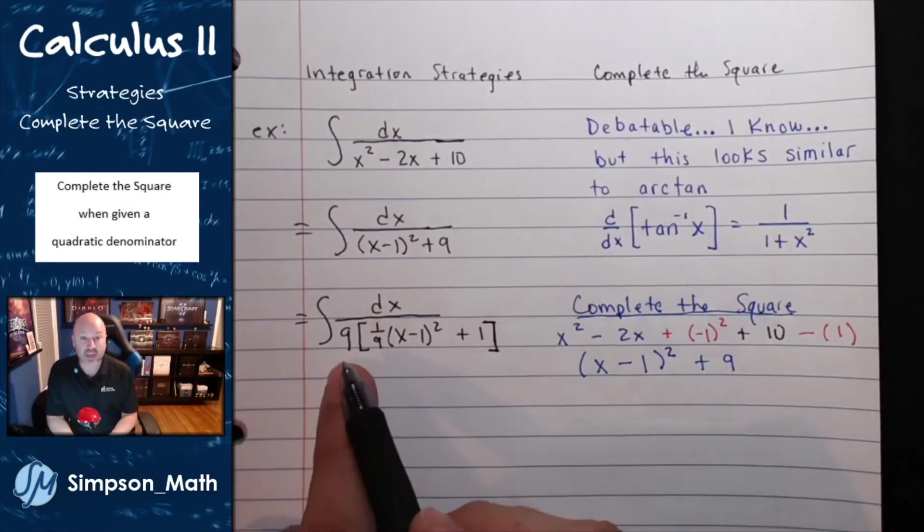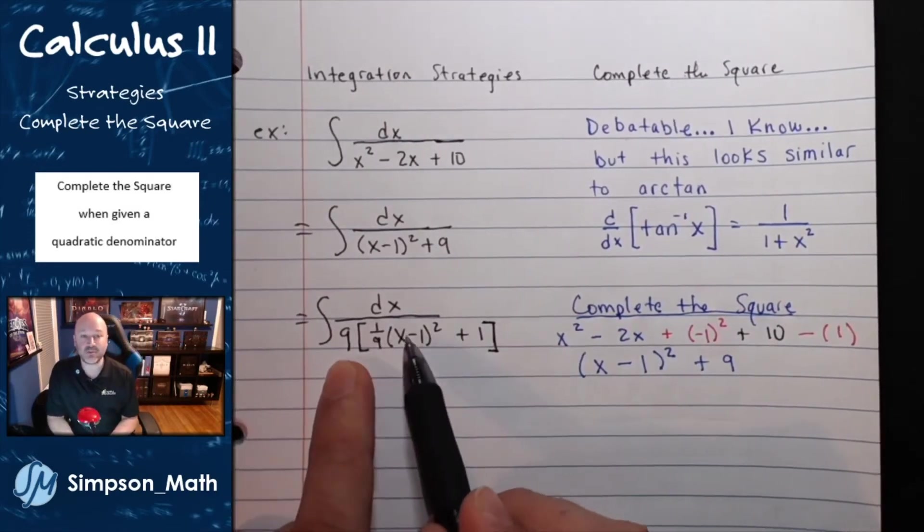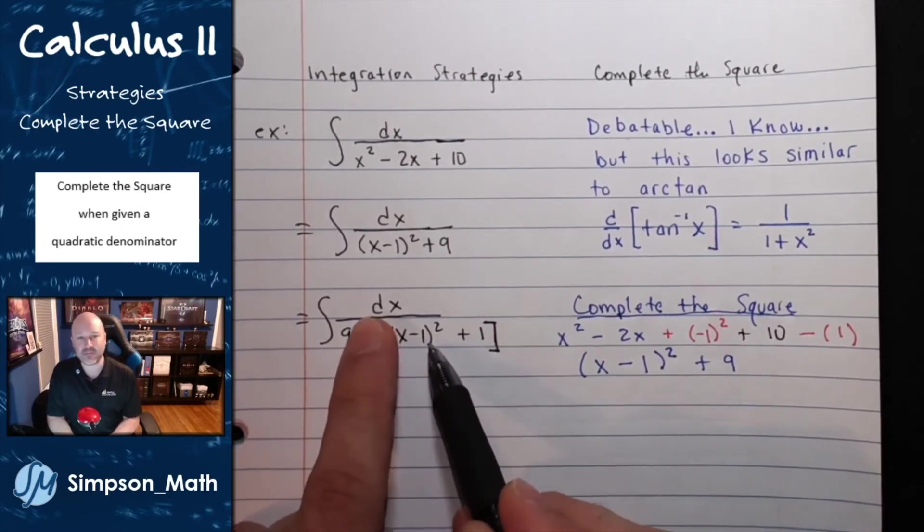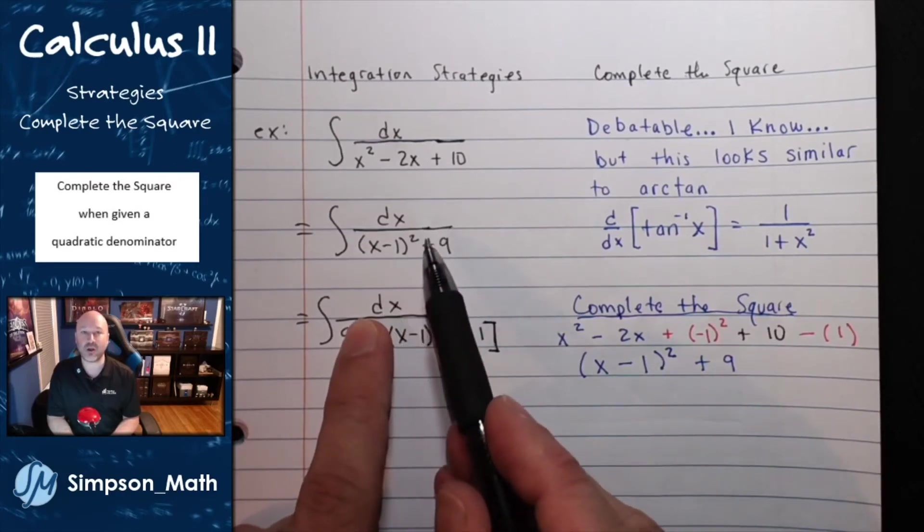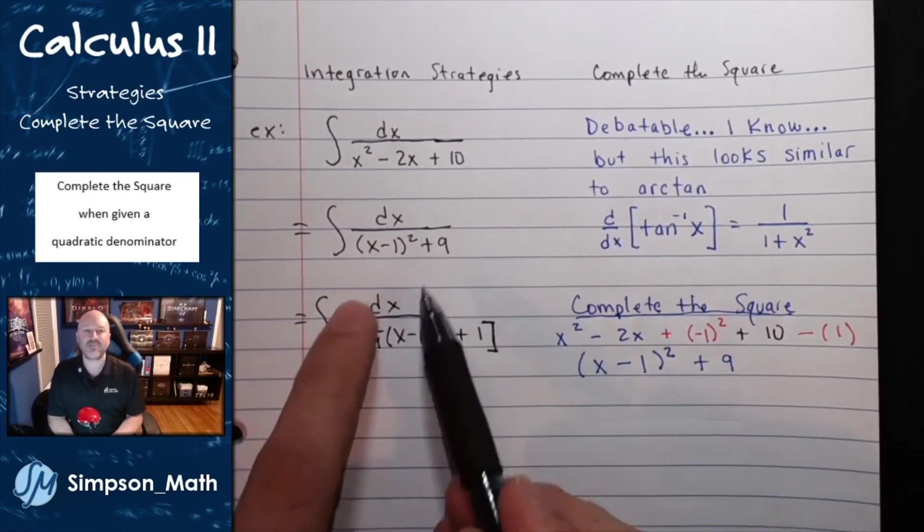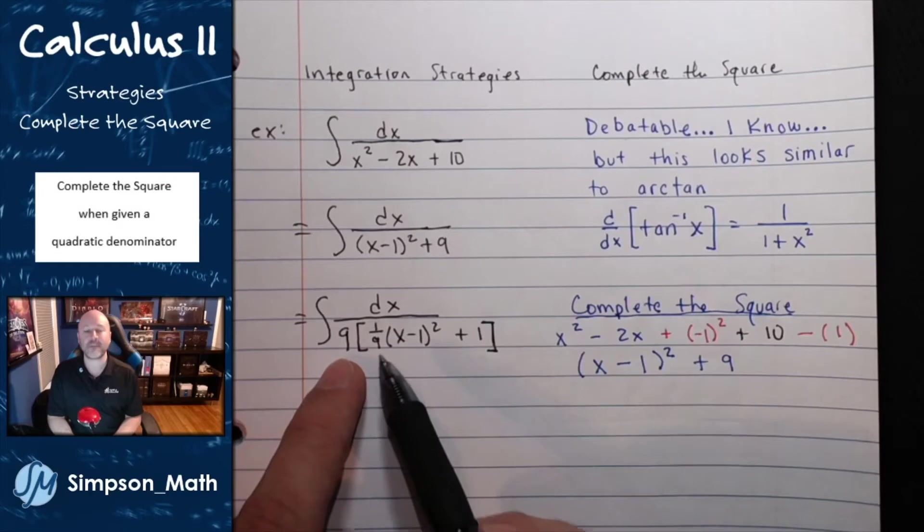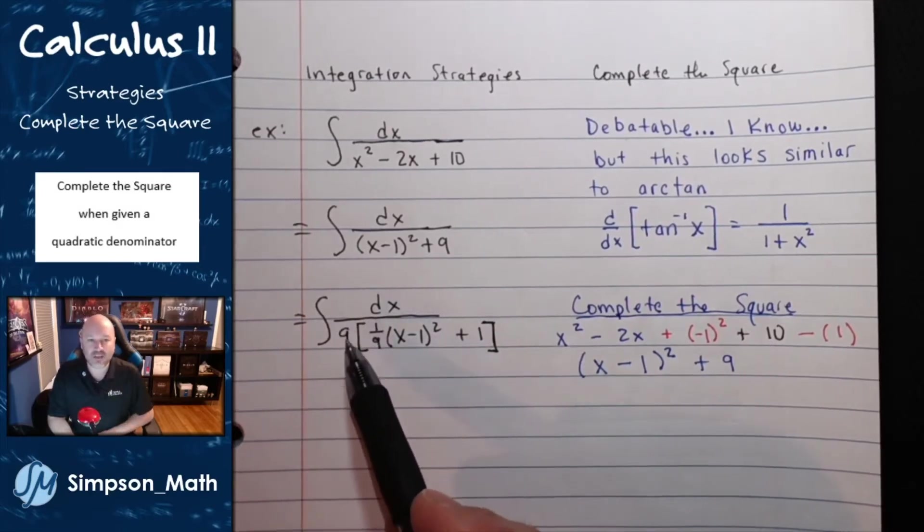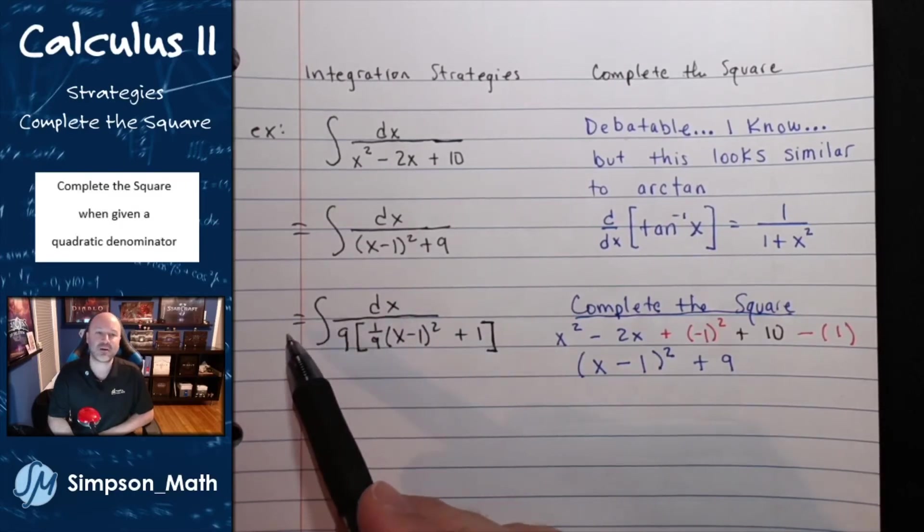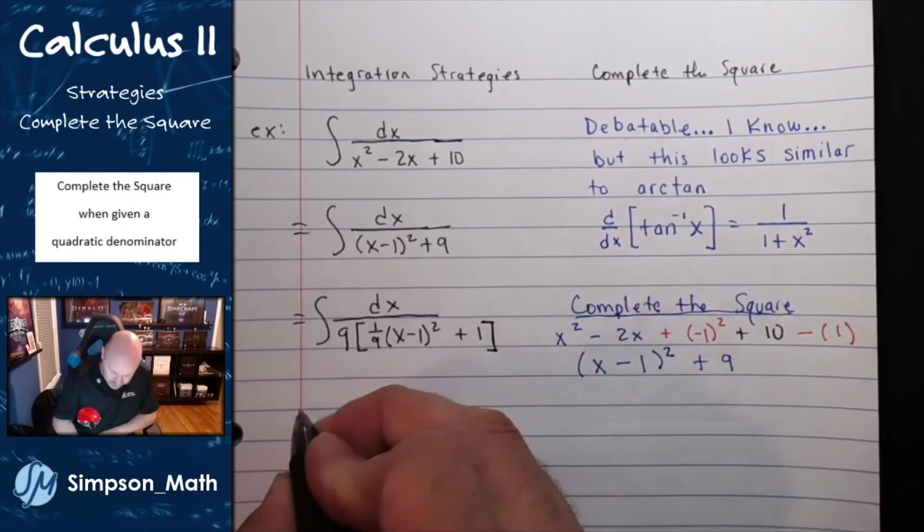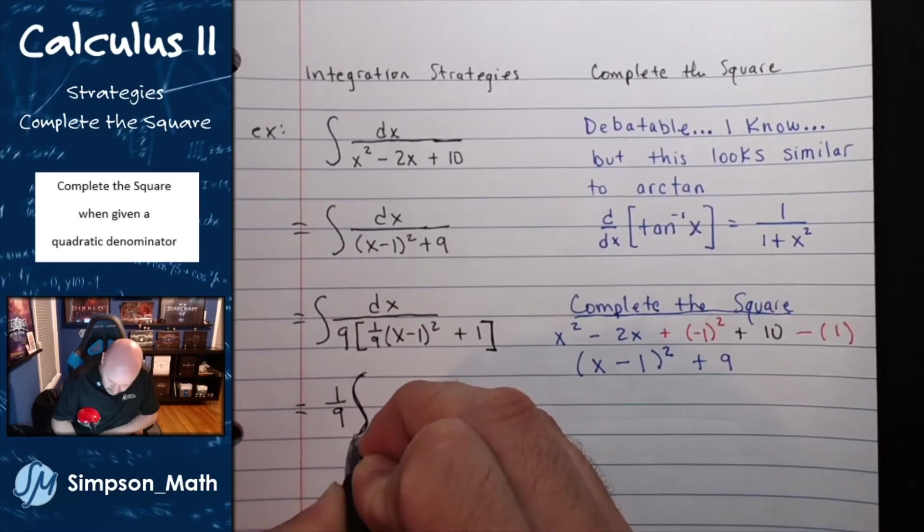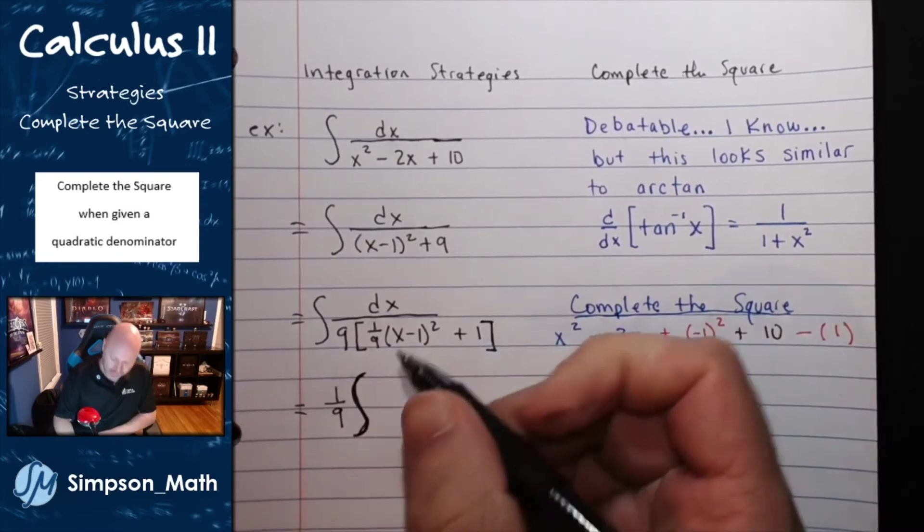Let me just make sure that makes sense. If I were to take this 9 and distribute to this binomial, 9 times a ninth reduces, and that leaves me with x minus 1 squared. 9 times 1 is 9. So I just factored a 9 from that denominator position. And then I have a 1 ninth coefficient on this integrand. So I'm going to pull that 1 ninth completely out of the integration process.